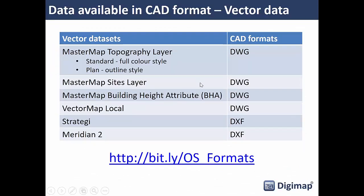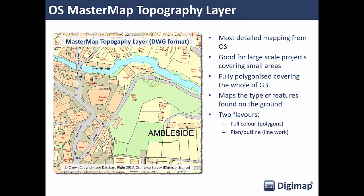The first dataset I want to talk about is MasterMap Topography Layer. This is the most detailed mapping available from Ordnance Survey of Great Britain. It's a fully polygonized dataset covering the whole country, concerned with what features are on the ground — is it a building, a road, a pavement? There's no distinction for commercial versus residential property, or A Road versus B Road; it's just classed as a building or a road.